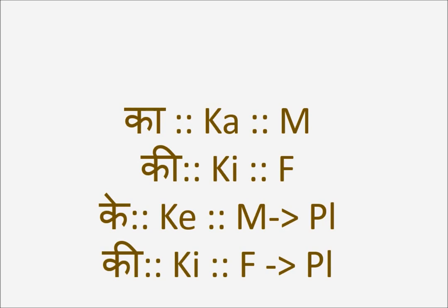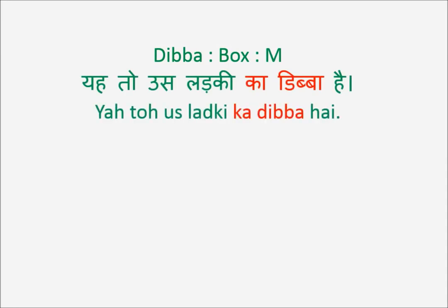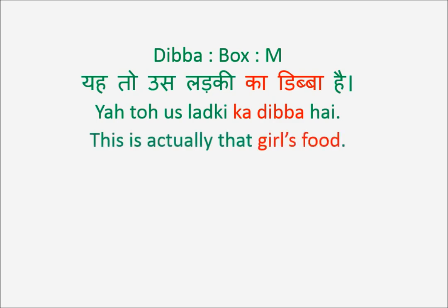Examples will make it clearer. Let's take the masculine examples first. Dibba means box — it's masculine. Yeh Toh Us Ladki Ka Dibba Hai. Now Ladki is a girl, but what we are talking about is Dibba, which is masculine. So the sentence 'this is that girl's box' becomes Yeh Toh Us Ladki Ka Dibba Hai. You use Ka Dibba, not Ki Dibba, because you are talking about Dibba — even though it's a girl's box.